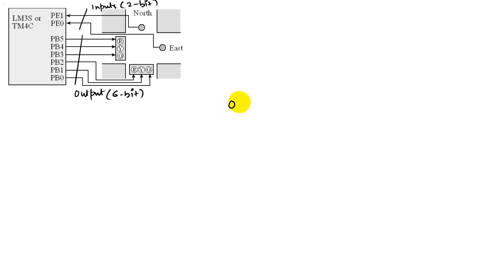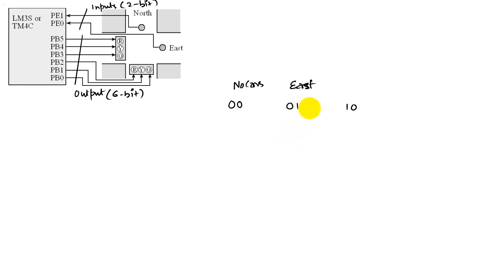Let's understand what our different inputs mean. An input of 00 tells us there are no cars. An input of 01 means there are cars in the east direction. An input of 10 tells us there are cars in the north direction. And an input of 11 means there are cars in both directions.